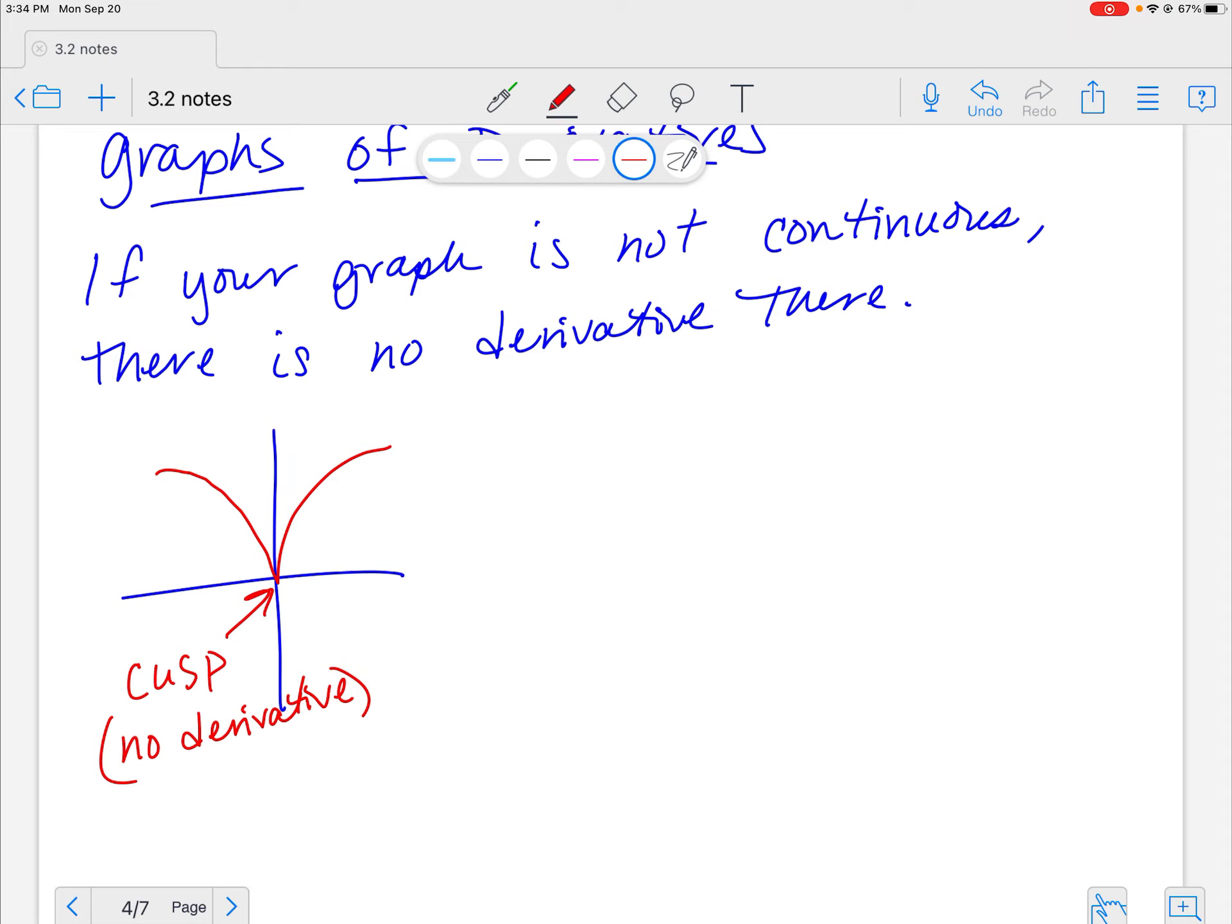A derivative is the slope of a tangent line. So if I'm looking at this line and I'm coming in here at this specific value, I'm going to have a vertical tangent, and I can't have a derivative of a vertical tangent because what's the slope of a vertical line? Undefined, right?